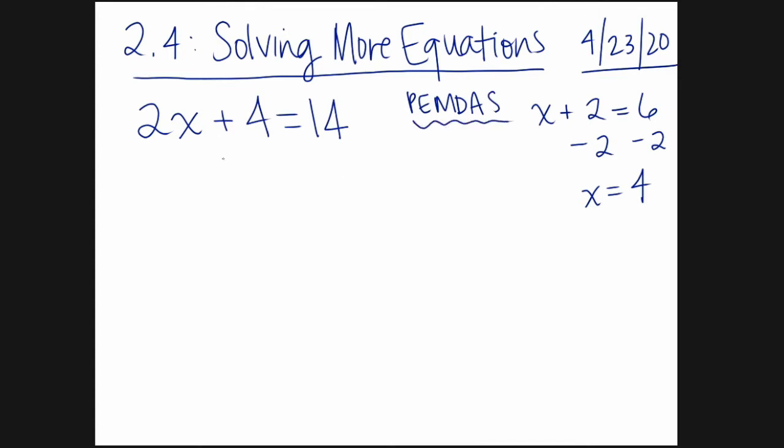So I want us to make a flowchart. And I want the flowchart to start with x. And I want us to think about what we are doing to x as we move through this equation. So following PEMDAS, what happens to x? Well, it's multiplied by 2 first. So times 2, that brings us to whatever 2x is, I don't know, I'm going to leave it blank.